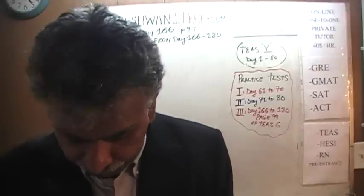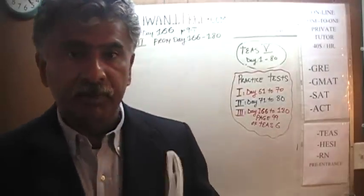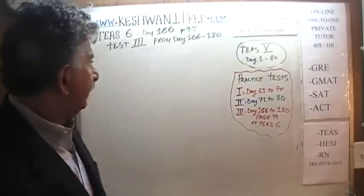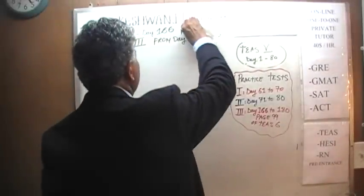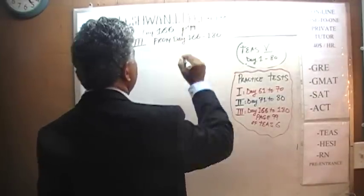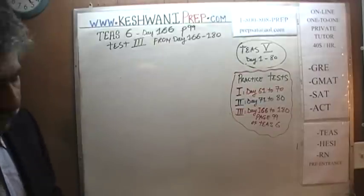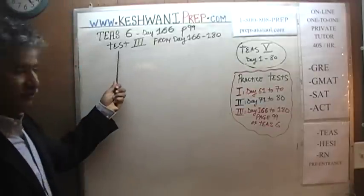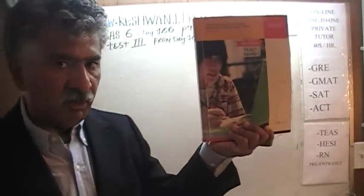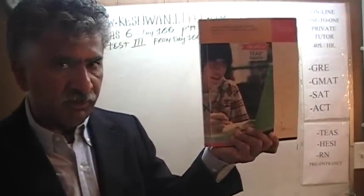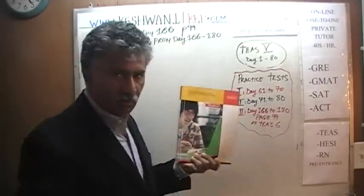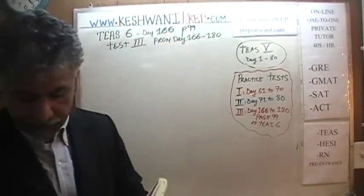Today is our lesson number 166. At this point in the game, we have already finished doing all the math problems that appear in this book, except the last part, which is the quiz on page 99. There are two more tests from the previous 5th edition — solutions to those problems can be found from day 61 through 70 for test number 1, and day 71 through 80. All problems from that book were solved from day 1 through 80. Let's get going.